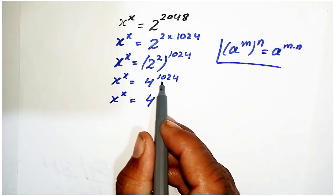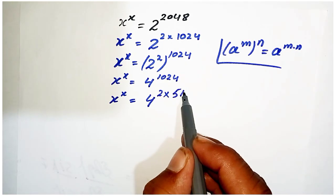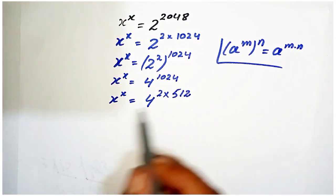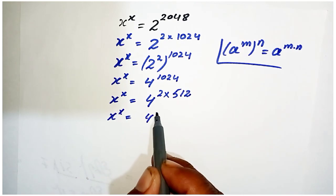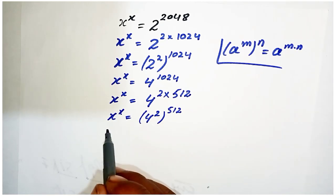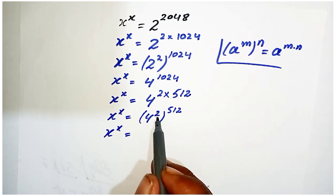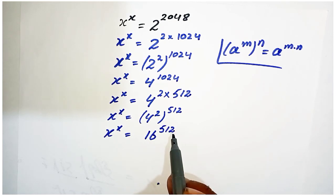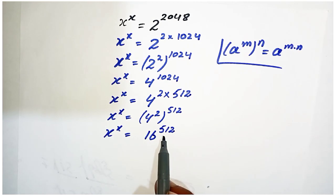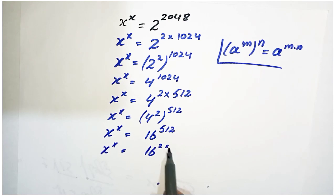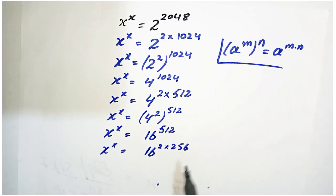Now we substitute 1024 = 2 × 512 and apply the power rule again, writing 4^(2×512). Since 4^2 = 16, we get x^x = 16^512. Next, we substitute 512 = 2 × 256, giving us 16^(2×256).